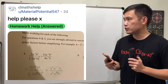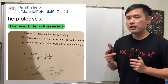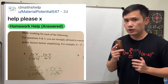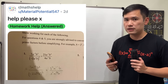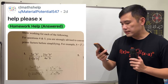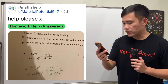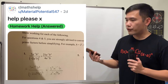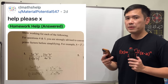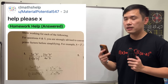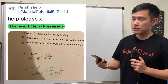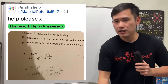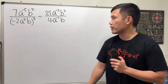Here we are going to divide these two rational expressions, and the key for this is to use the rules of exponents. I see that you flipped the second fraction already, because when you divide a fraction, it's the same as multiplying by the reciprocal of the second one. Now let's see how to continue from here.